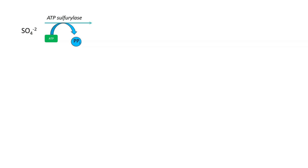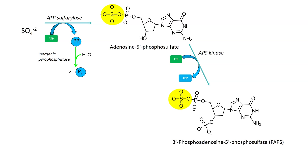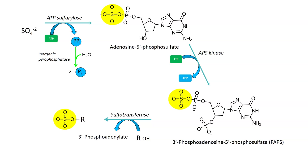The sulfate can go through the ATP sulfurase again, giving you the inorganic phosphate and the adenosine 5-phosphosulfate. We've got an ATP kinase that takes in an ATP and releases an ADP, giving you 3-phosphoadenosine 5-phosphosulfate, abbreviated PAPS. It now has two phosphate groups on it rather than just one. We've taken off the hydroxy off of the 3-prime and put in the phosphate group there. Then with a sulfotransferase, we take the R part and get 3-phosphoadenolate, which attaches the R onto the sulfur.